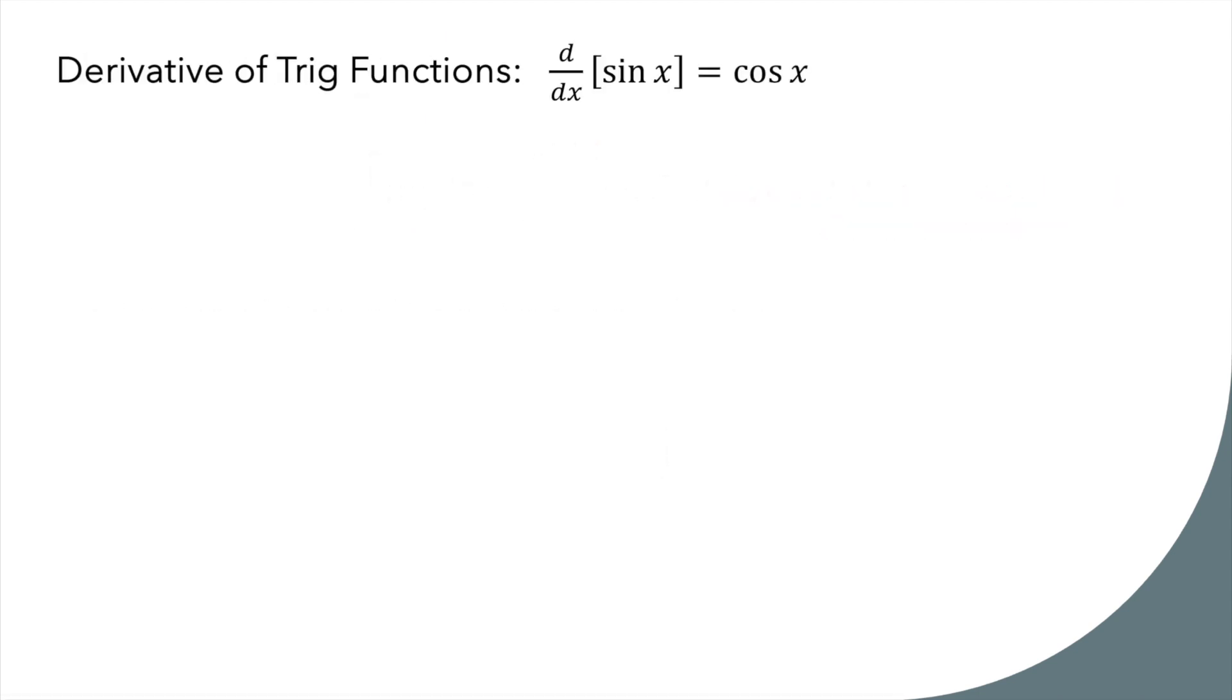What about trig functions? If you take the derivative of sine x, you get cosine x. What happens if you take the antiderivative of cosine x? You get sine x plus c. If you take the derivative of cosine, you get negative sine. If you take the antiderivative of sine, what do you get? Negative cosine plus c.